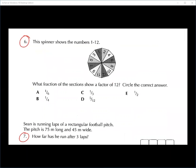Question number six. Let's have Umariza, please. This spinner shows the number 1 to 12. What fraction of the section show a factor of 12? Circle the correct answer. So first we have to write down all the factors of 12. What does it mean by factors of 12? There are two numbers that times together that equal 12.